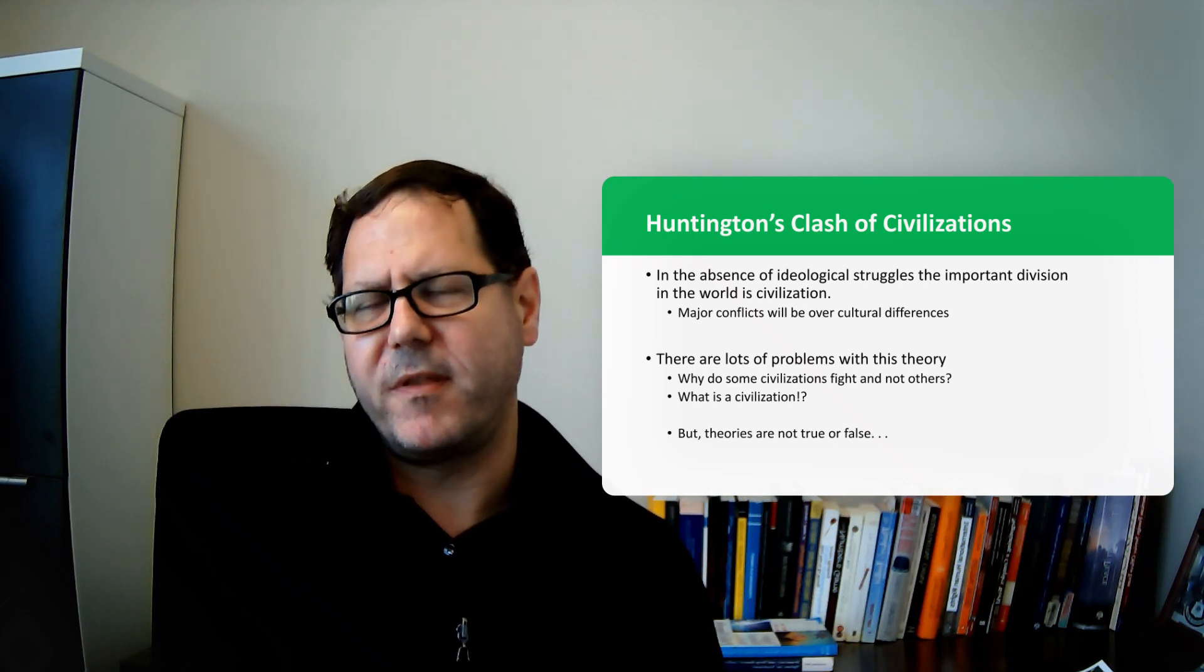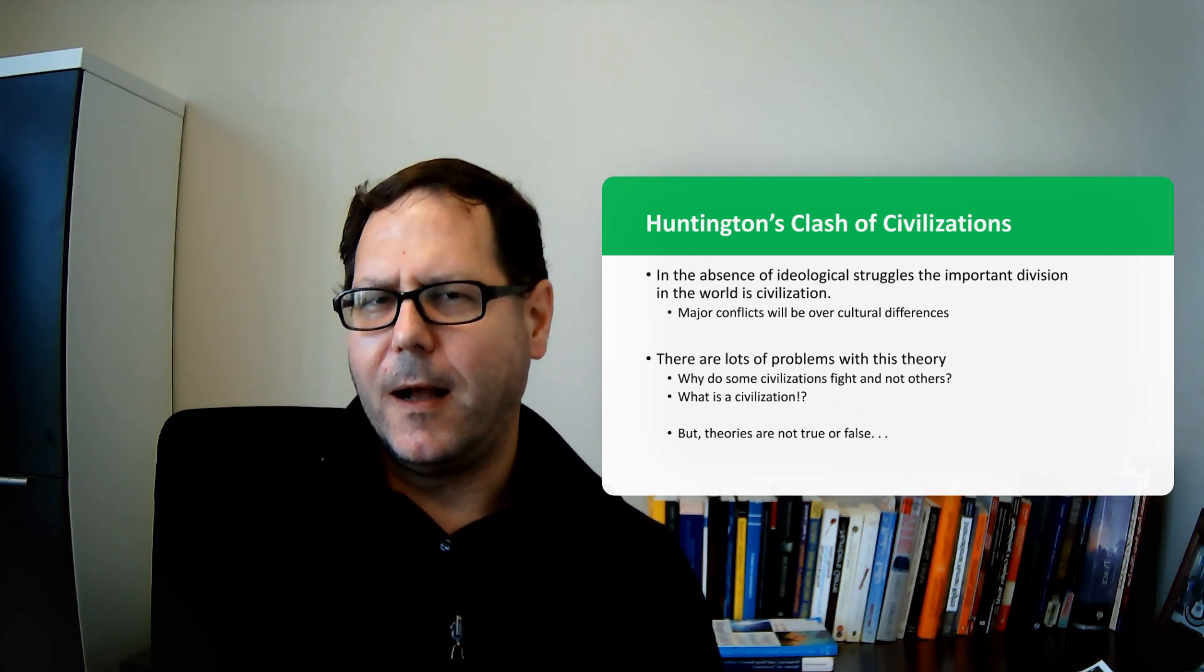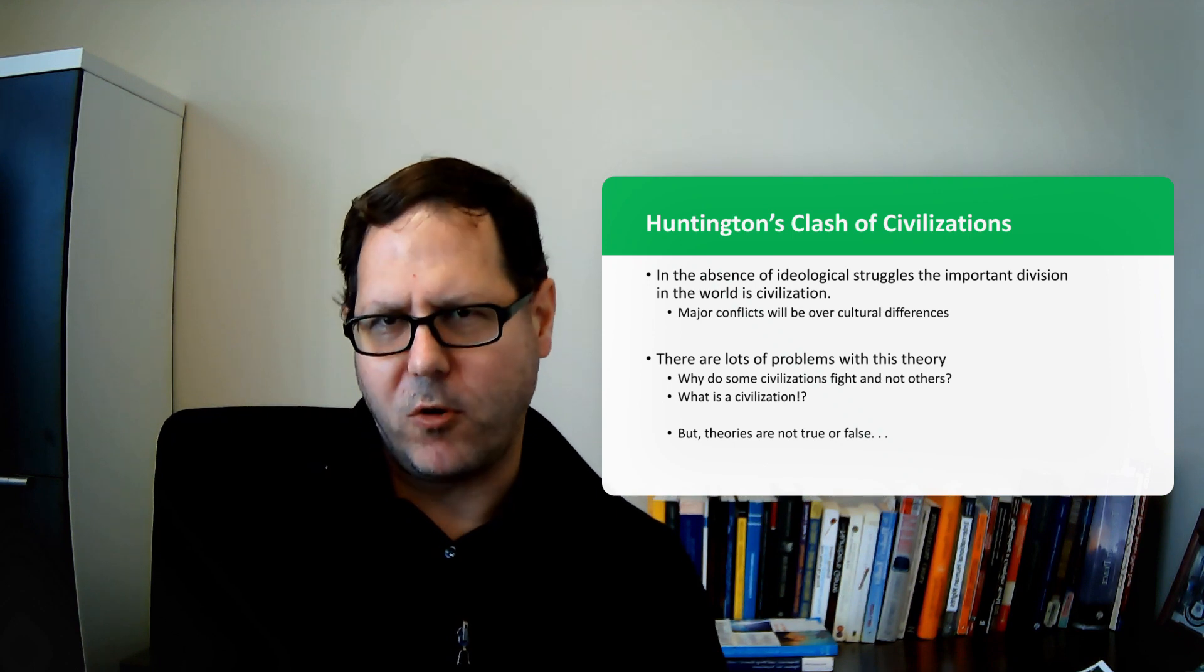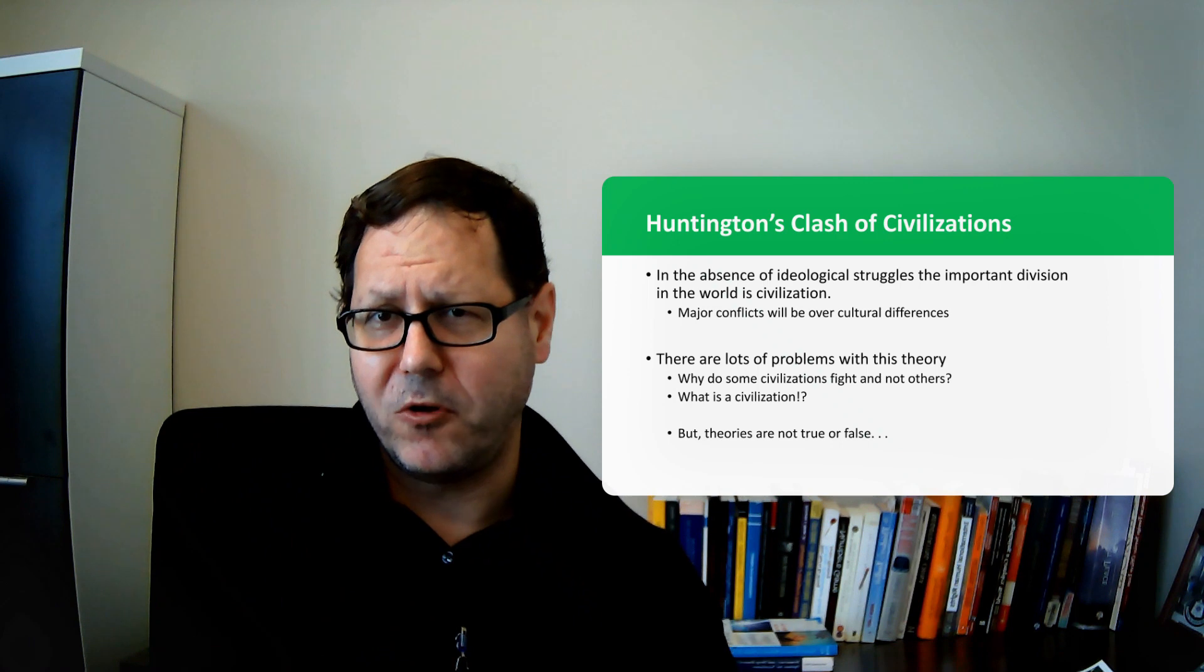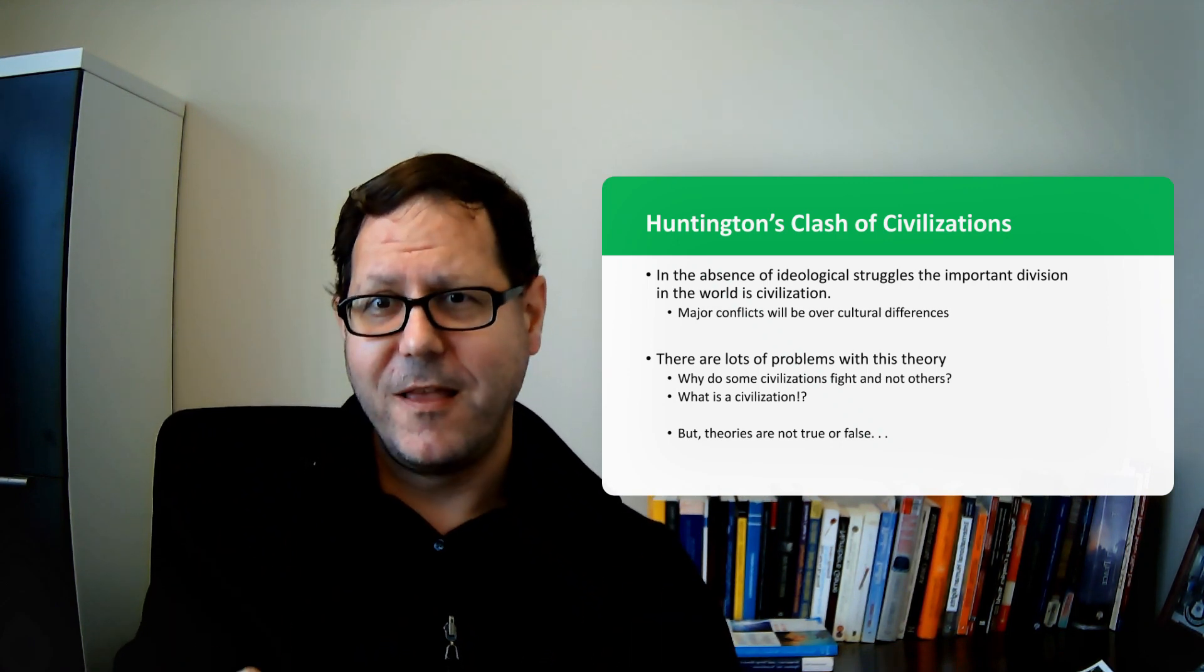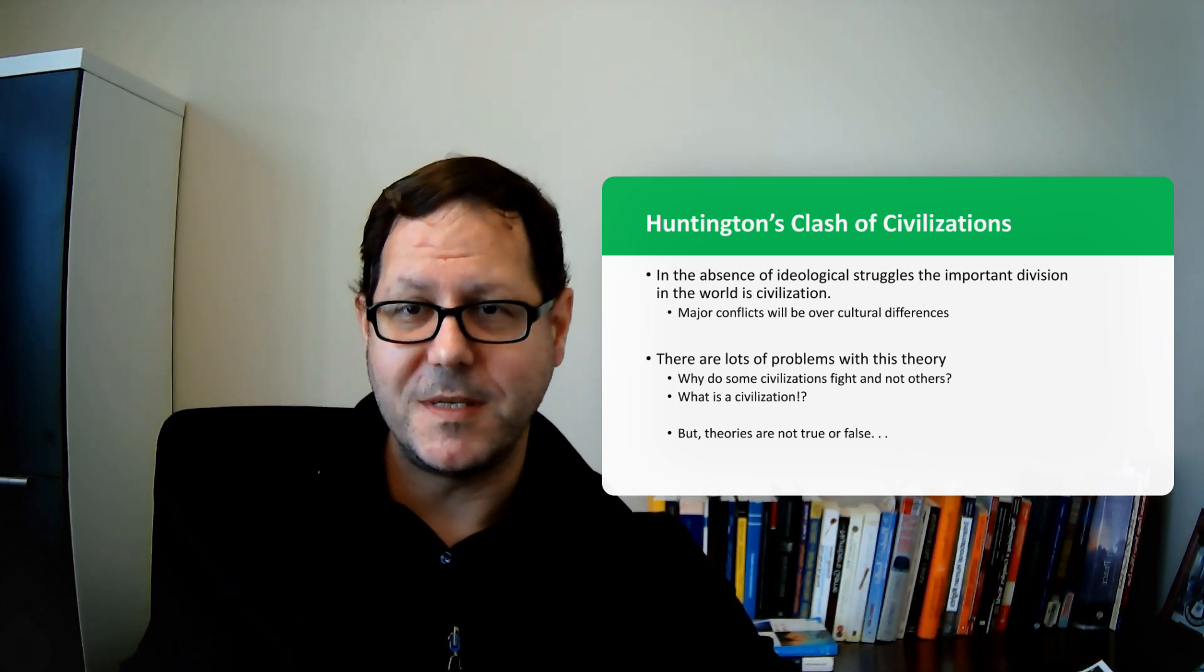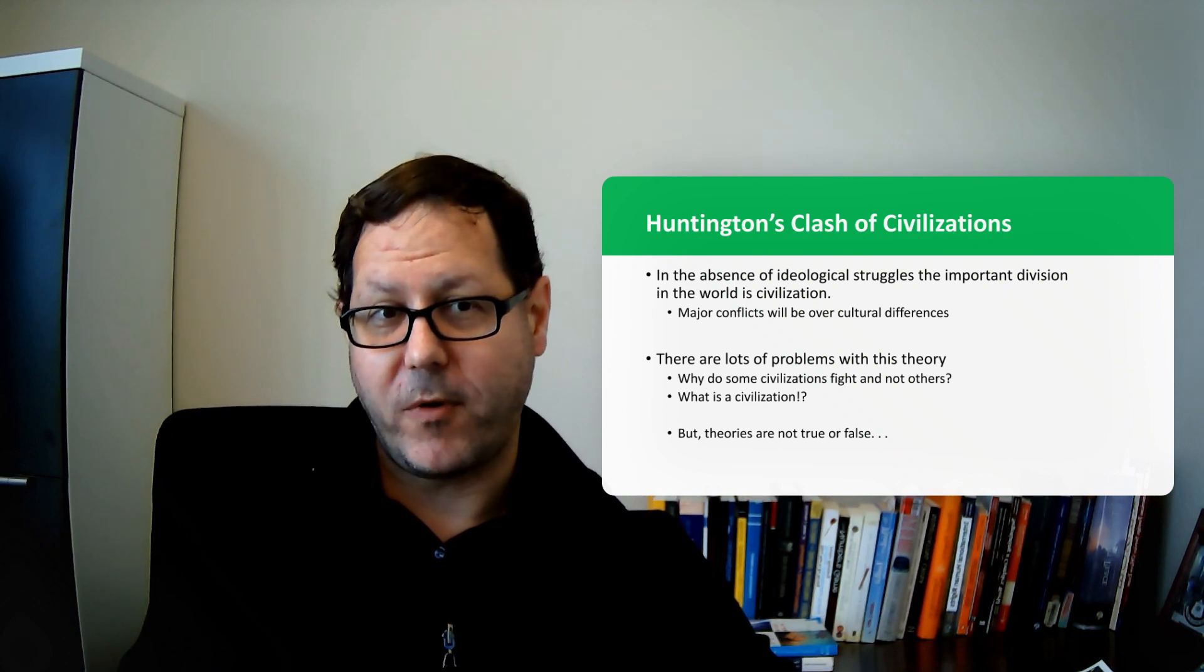And so the measure of a theory isn't whether Sam Huntington's map is right. The measure of a theory is whether or not thinking about the world in the way that Sam Huntington's map gets us to think about the world is a useful exercise. Theories are not true or false. Theories are useful or not useful. And so I think the question becomes is this a useful way to think about how the international system operates.